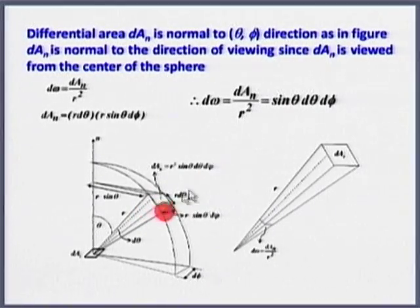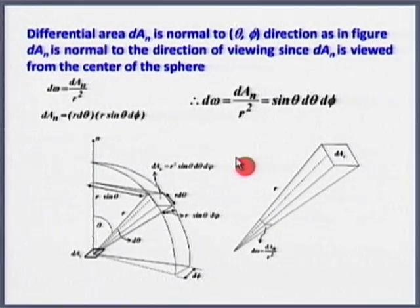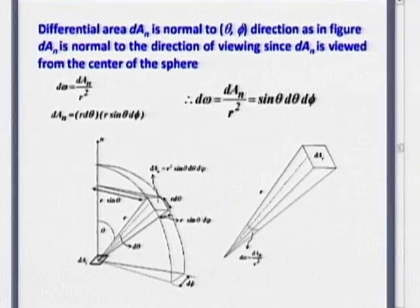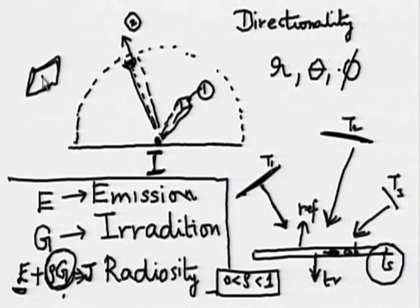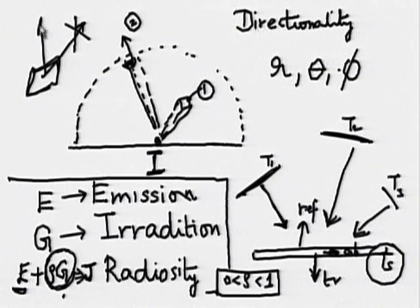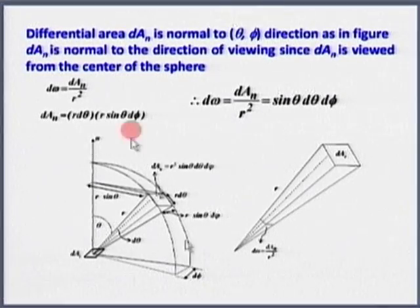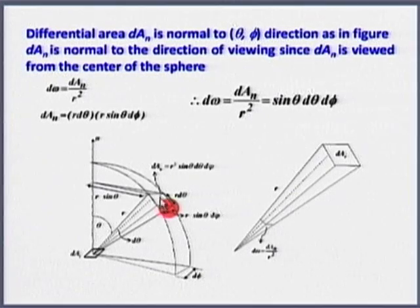We understand this concept of outward normal — in which direction is this normal if I go to a surface. If this is the surface, outward normal we do not draw like this; this is not an outward normal, this is not an outward normal. Outward normal is this. Intuitively we know what an outward normal is, and that is what we are going to use here — the line in this direction is the outward normal.